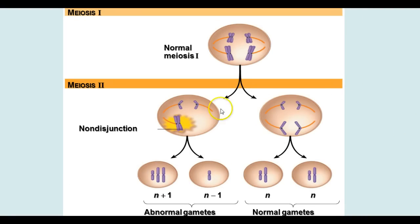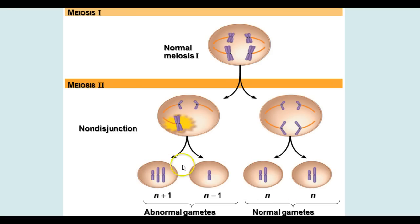If nondisjunction happens in meiosis II, the pairs separate correctly in meiosis I, but the sister chromatids don't separate in meiosis II. This results in two normal gametes and two abnormal gametes — one with an extra chromosome and one missing a chromosome. Any of these conditions can result in various kinds of conditions that people can be born with.